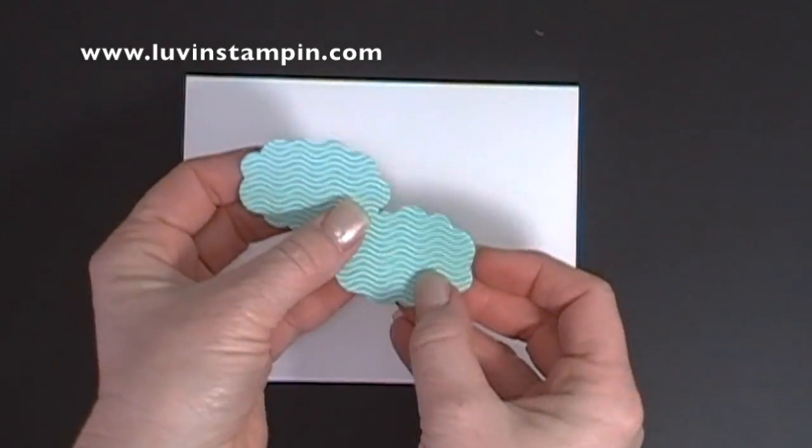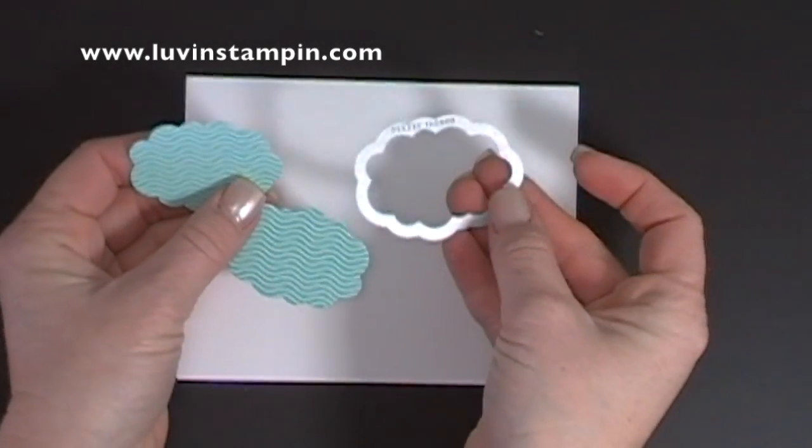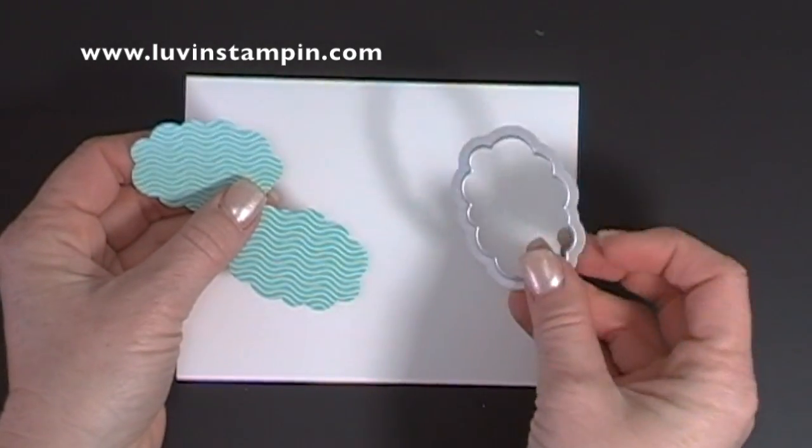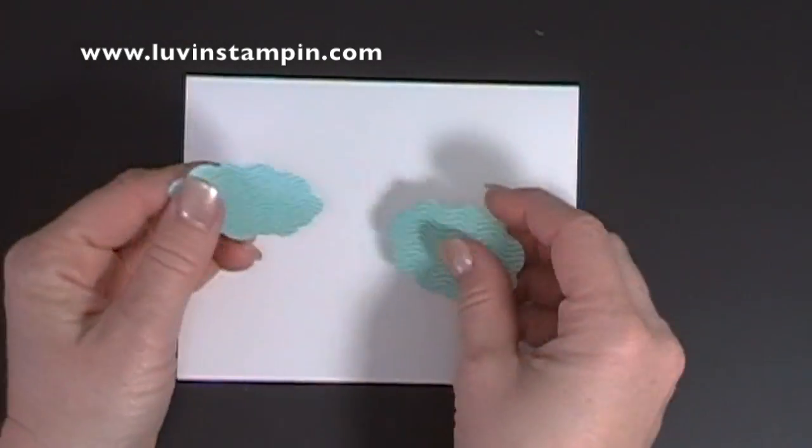And I'm using the Fresh Prince Designer Series paper stack to cut the two clouds, and I used this framelit out of the Just Sayin framelit set. That's in our occasions catalog.